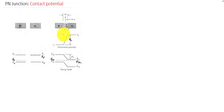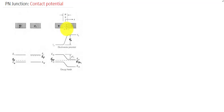In this lecture, we are going to derive an expression for this contact potential in terms of the doping concentration on the P and N side. The transition region has a width W, and we are dealing with the electrostatic potential difference across it.